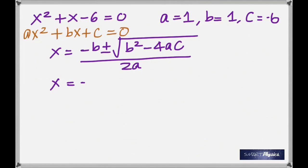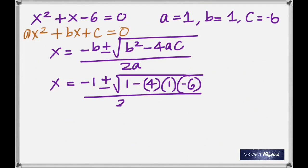Now carefully substitute. It's minus 1 because b is 1, plus or minus b squared would be 1 squared again 1, minus 4 times a times c which is -6, divided by 2 times 1.